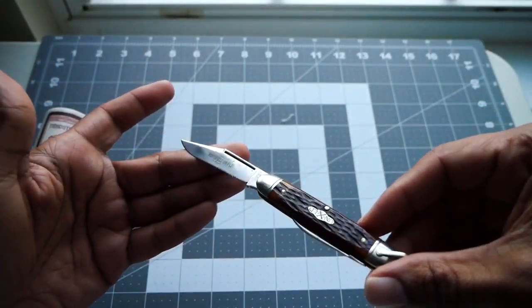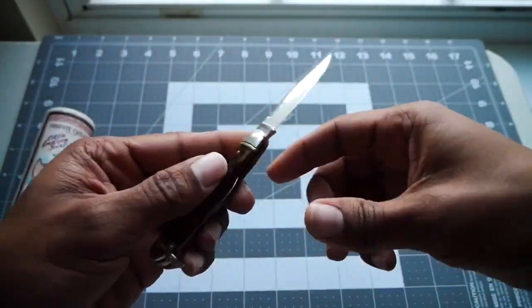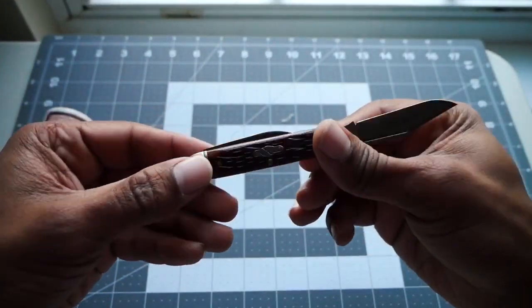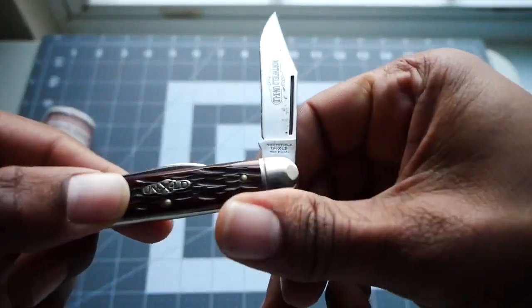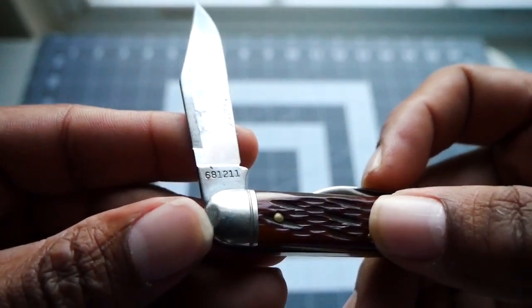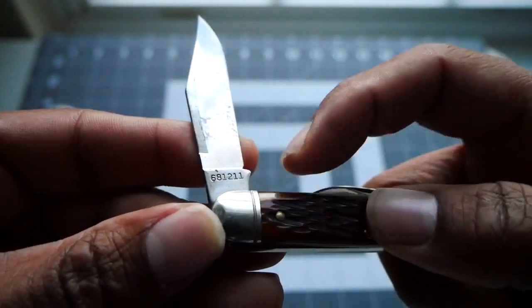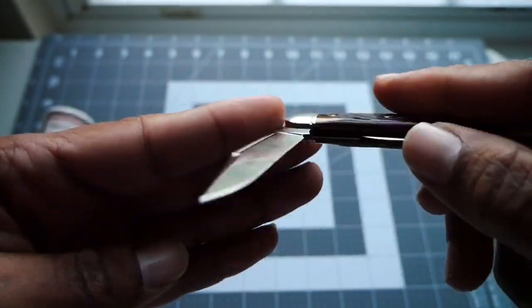This is my White Owl, my GEC 68 White Owl. And let's see if I can get you in on the tang stamps. This is from 2011. You can see there by the 211s, a little bit of patina.